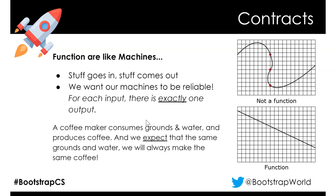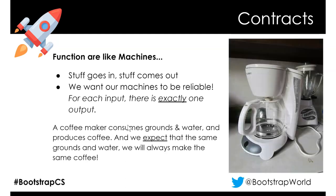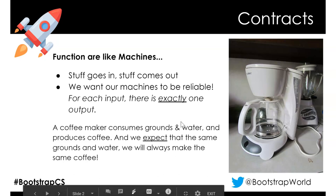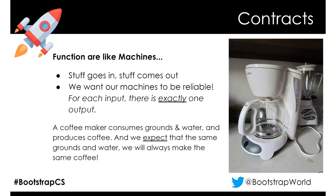We can think of a coffee maker as a machine: we put in grounds and water and always expect to get coffee - not spaghetti, not other things, just coffee. This machine takes a certain type of input and always produces a certain type of output. In math we have specific terms for those: the input of what goes into a function is the domain, and what comes out is the range.